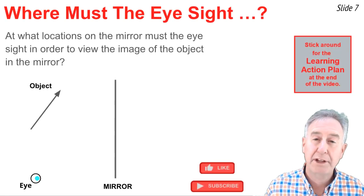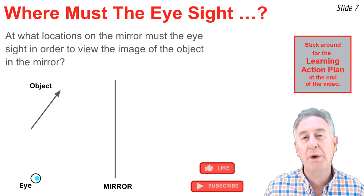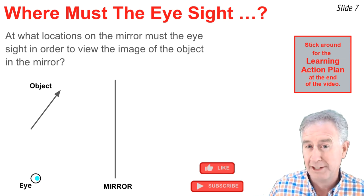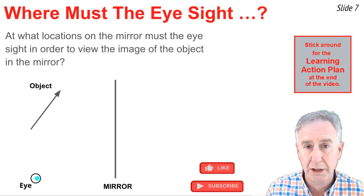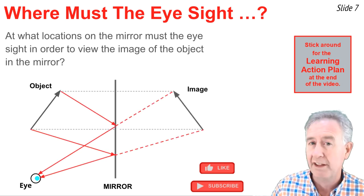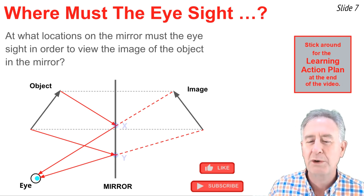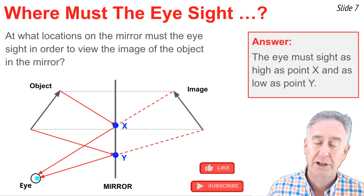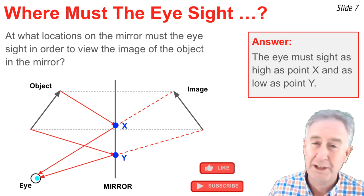There will likely be various applications of ray diagramming in your physics class. One classic application is to ask: at what locations on the mirror must this eye sight in order to view the complete image of this object in the mirror? The process begins by drawing your complete ray diagram — locate the image, draw the reflected rays, draw the incident rays. Now you have to answer the question. I've marked two points on the mirror: point X and point Y. From this eye position, this eye must sight as high as point X and as low as point Y in order to view the image of this object.